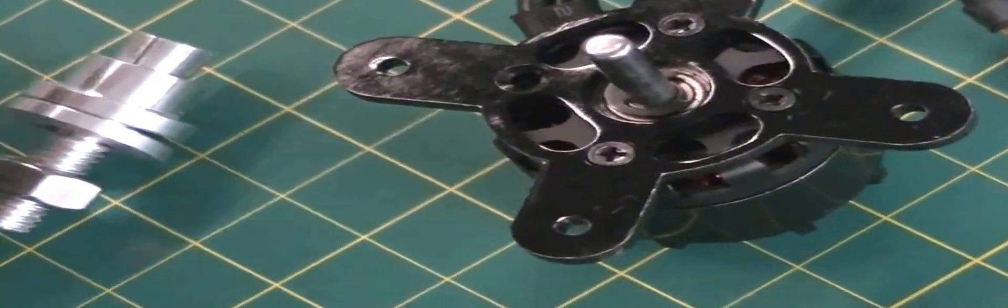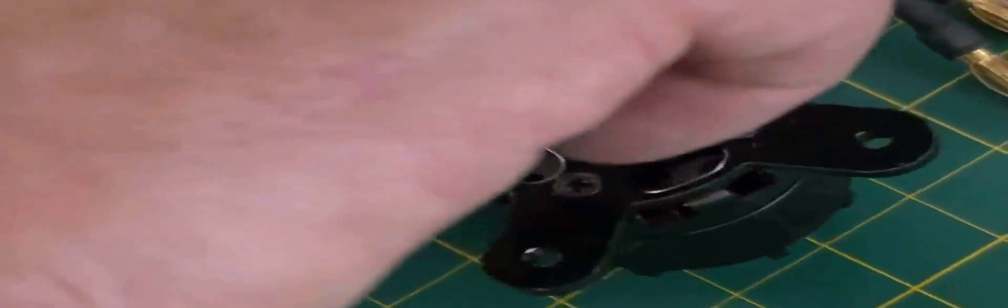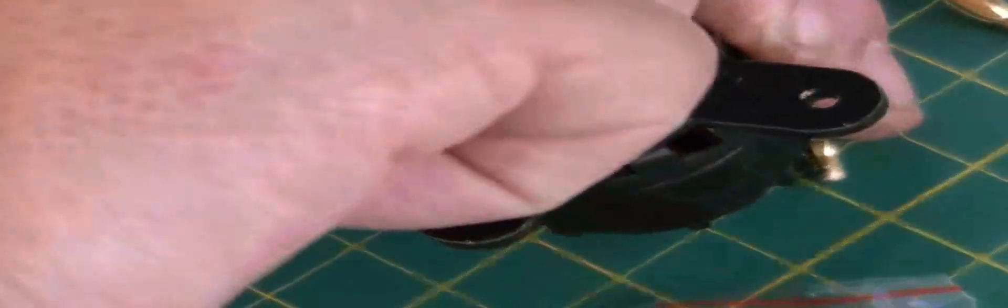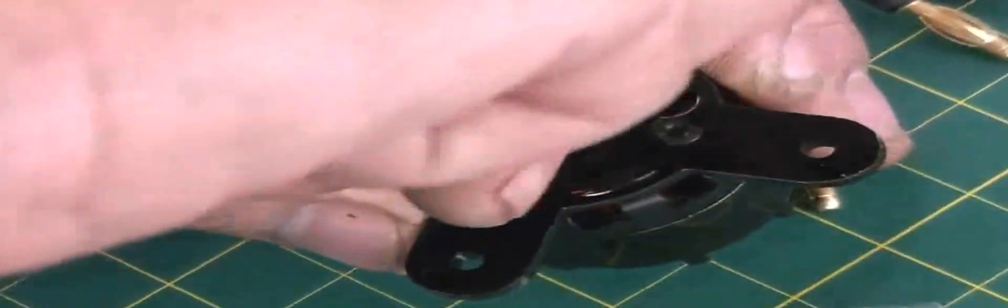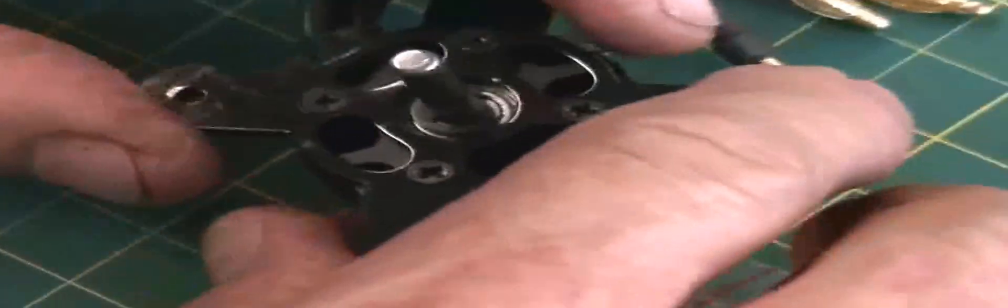All right, now once you get all four of these in, you want to tighten them up. And tighten them up cross pattern. Tighten this side, and tighten that side. And top and bottom.